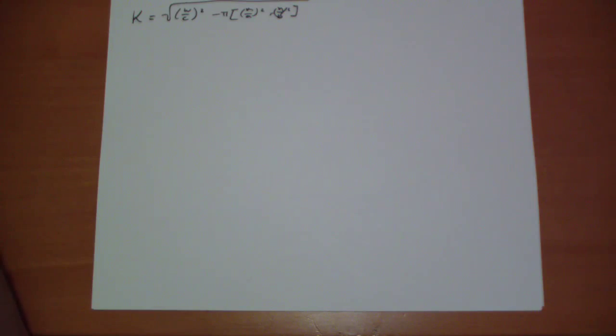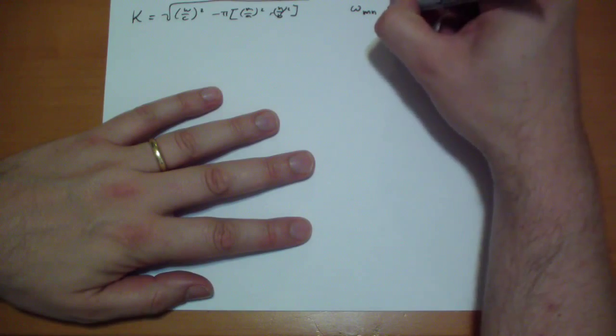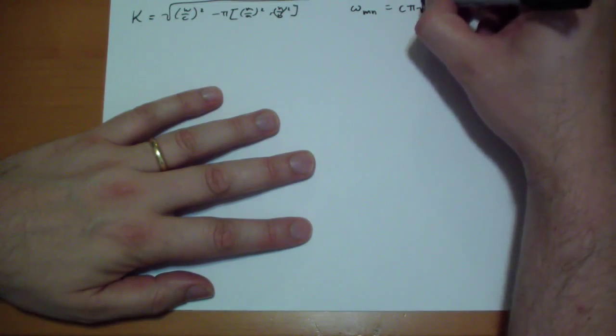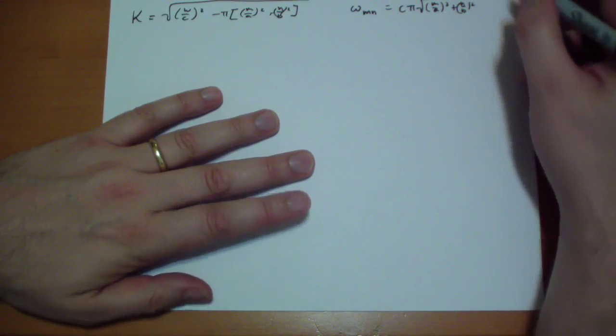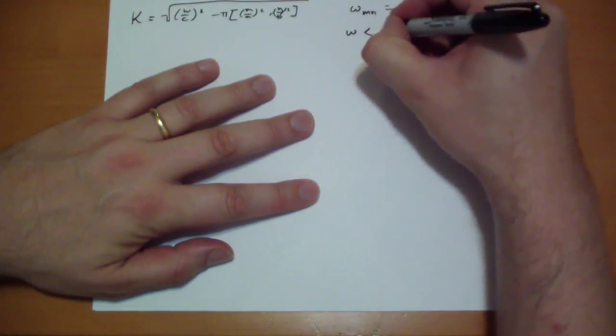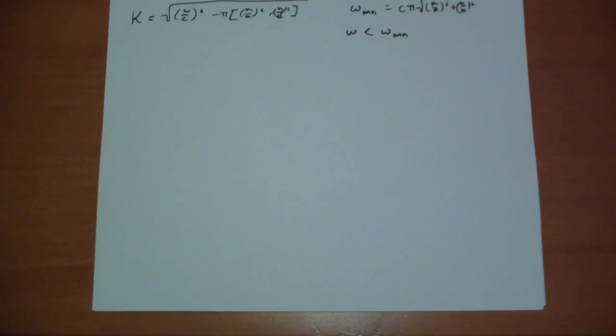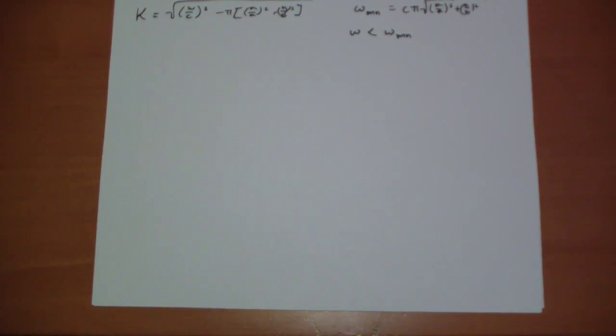If we have, we'll notice that there's a particular frequency that is interesting. We call this Omega MN, which is equal to C, the speed of light, times pi, times the square root of M over A squared plus N over B squared. If we have a frequency that is, when Omega is smaller than Omega MN, then our wave number, our Kappa, ends up becoming imaginary. So we've taken the square root of a negative number. This is Omega MN. When our frequency is smaller than that, we get that mess.